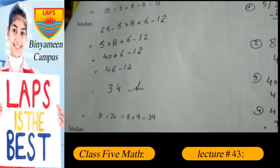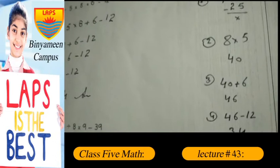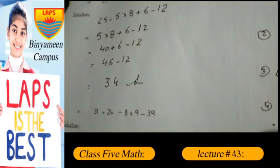Now 5 multiplied by 8 plus 6 minus 12. Now 5, second part, 8 multiplied by 5, we get 40.